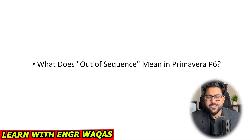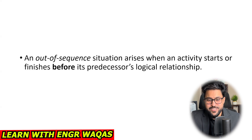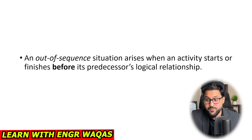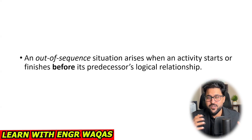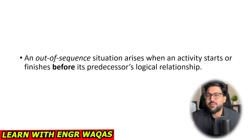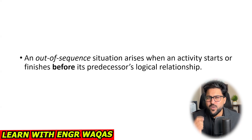What does 'out of sequence activities' mean in Primavera P6? Out of sequence means this situation arises when an activity starts or finishes before its predecessor's logical relationship. My upcoming slides are compiled to make this concept very simplified for you to understand, but before that I would revise one more concept.